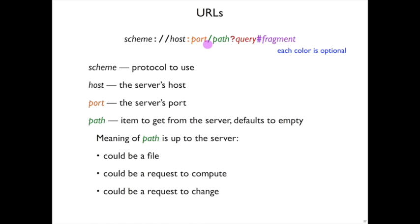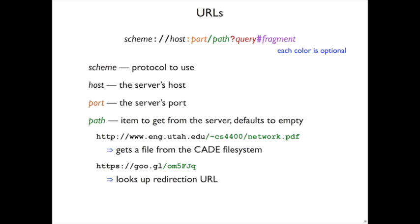The path part, which is optional and has a slash before it, has a meaning that's completely up to the server. One possible meaning is that it's a path on some file system, or it could be a request to compute something, or a name of something to compute. It could also be a request to change some state, say to upload a student name into a database. For example, going to www.eng.utah.edu with path tilde cs4400 slash network.pdf goes on the CAID file system to that user's public HTML directory.